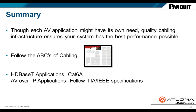In summary: each AV application may have its own need, but quality cabling infrastructure ensures best possible system performance — and that infrastructure extends beyond just cables to the HDBaseT extenders you connect to. When in doubt, follow your ABCs of cabling to select the right cable. For HDBaseT, the recommendation is Cat6A. For AV over IP applications, follow standard network specifications. That's all I have today — thank you very much for your time, Patrick, I'll turn it back over to you for questions.